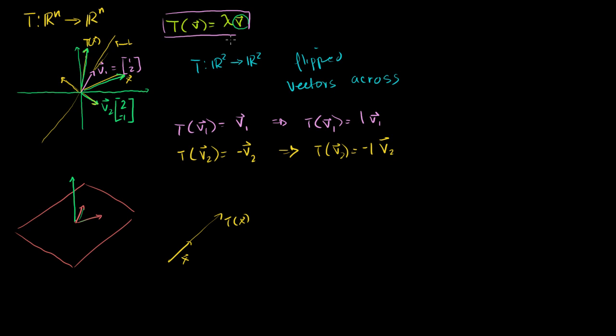Any vector that satisfies this right here is called an eigenvector for the transformation T. And the lambda, the multiple that it becomes, this is the eigenvalue associated with that eigenvector.